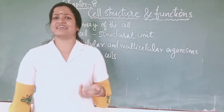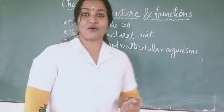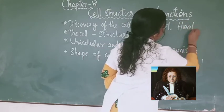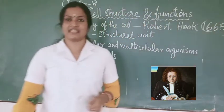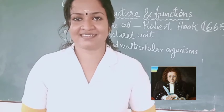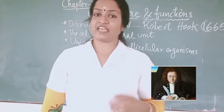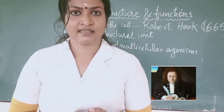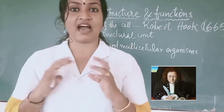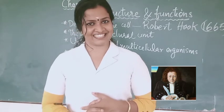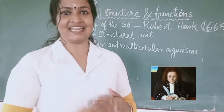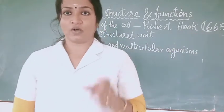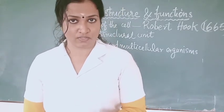Who discovered the cell? It was Robert Hooke, in 1665. Do you know what cork is? Cork is actually the bark of a tree. When he was observing cork through a simple magnifying microscope, he noticed some box-like structures that actually resemble a honeycomb. He called those boxes cells. So the cell was discovered by Robert Hooke in 1665 when he was observing cork through a simple magnifying microscope.